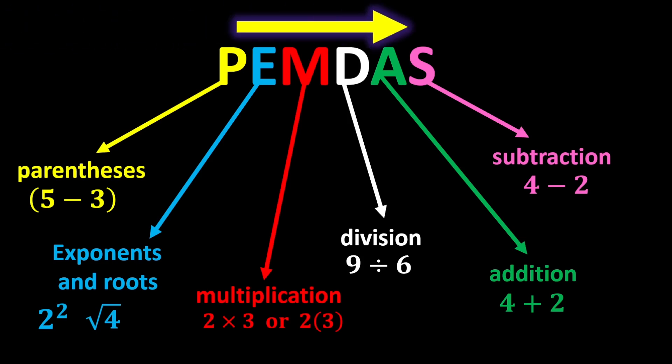Multiplication and division have equal priority, so whenever both appear in an expression, move from left to right and perform whichever you reach first. This rule also applies to addition and subtraction.